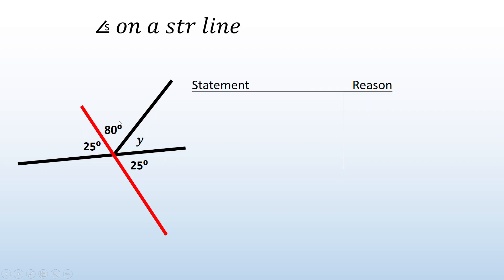So I can say 80 plus y plus 25. I'll obviously leave out that 25 because it's underneath the line. So all of these three, when I add them together, I get 180 degrees. So if I write that as a statement, that's what it looks like. And the reason that statement is true is because they are all angles on a straight line, which I know add up to 180 degrees.